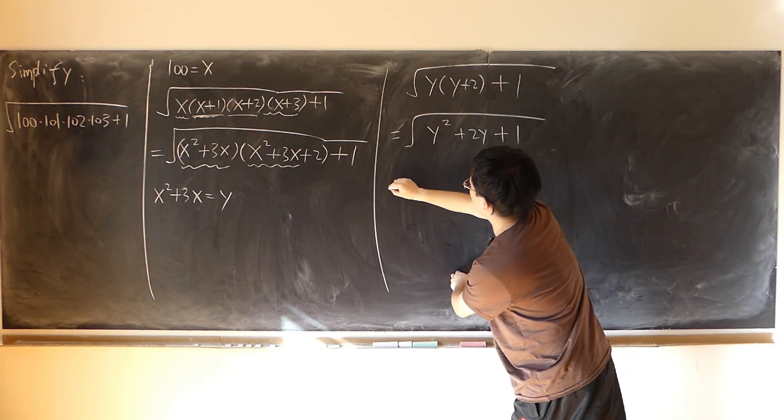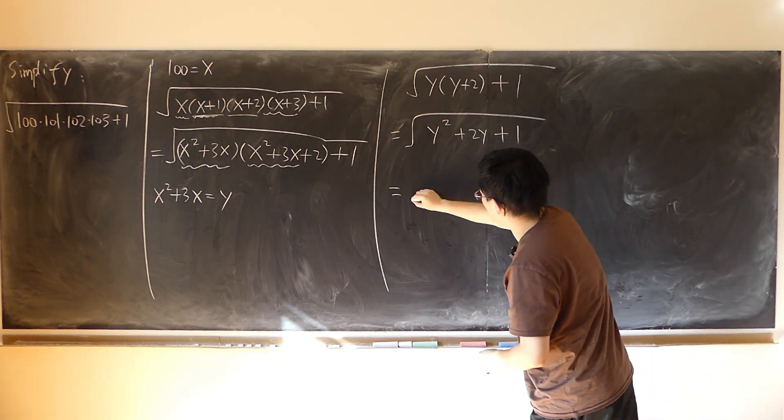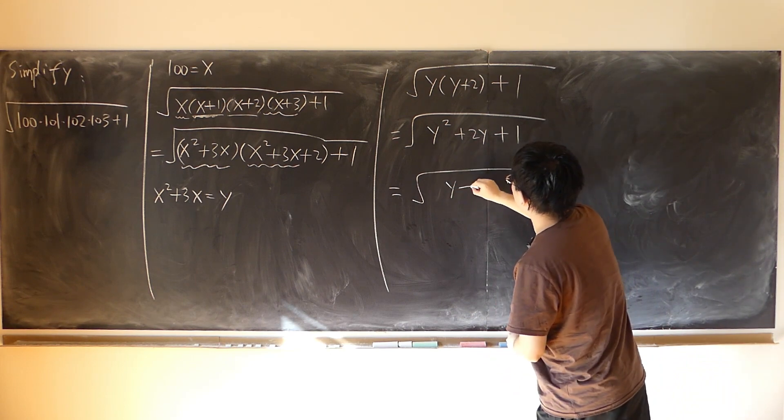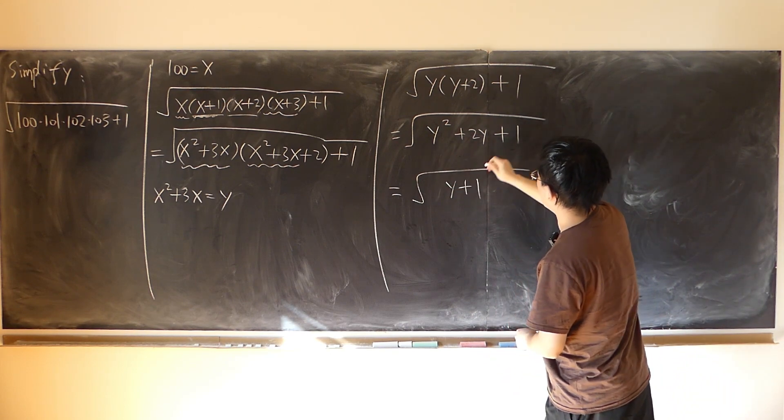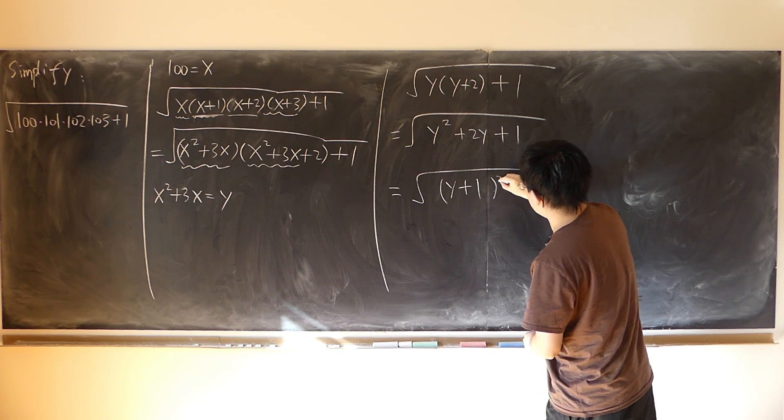Of course, that's a perfect square: y plus 1 quantity squared. And the square root of that.